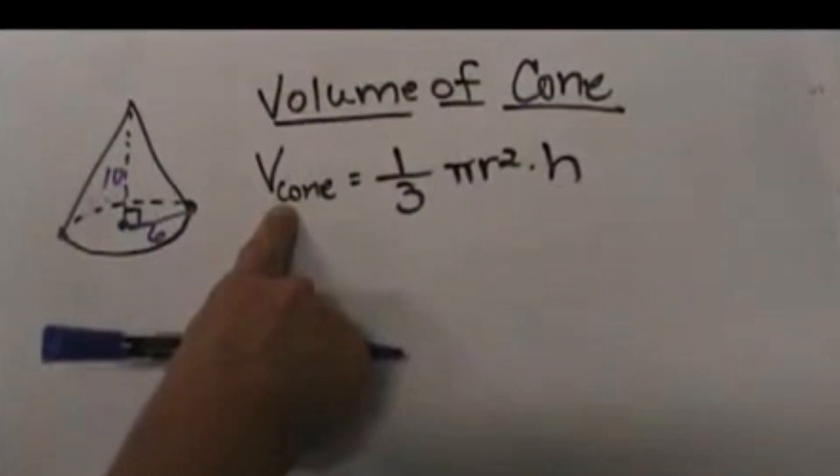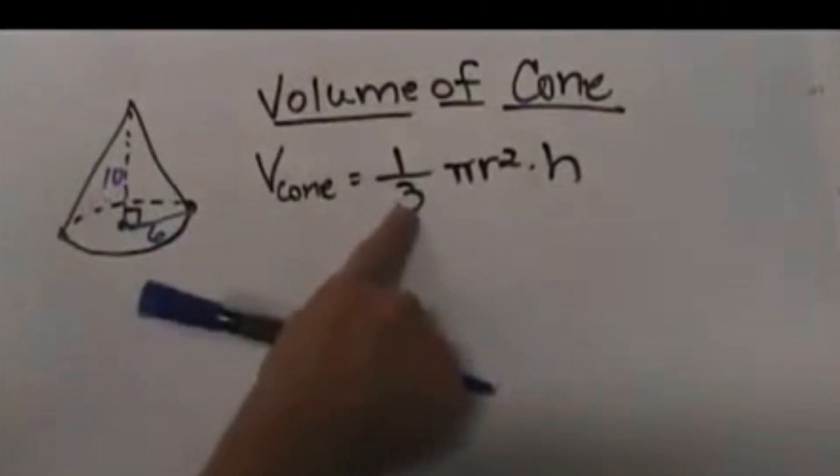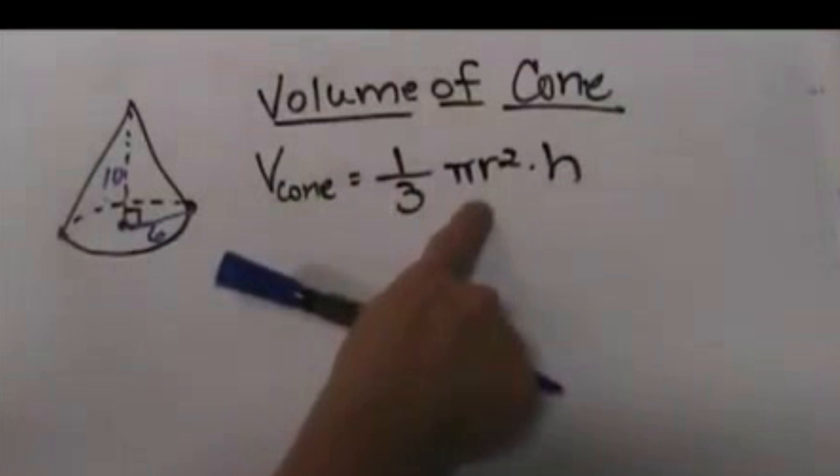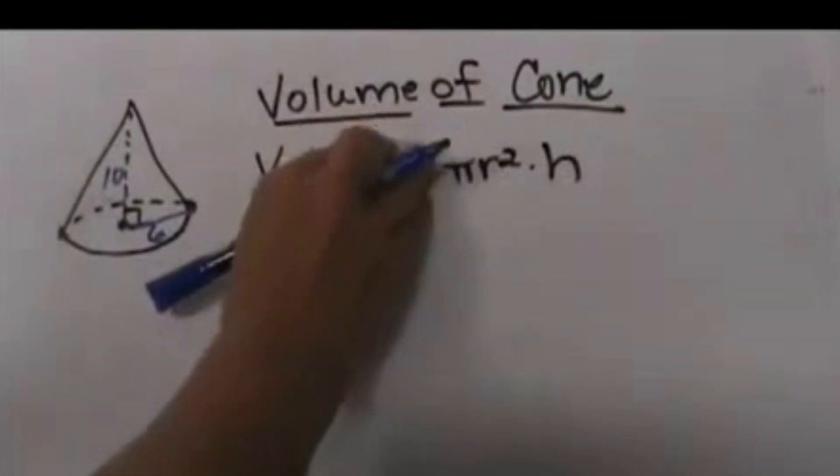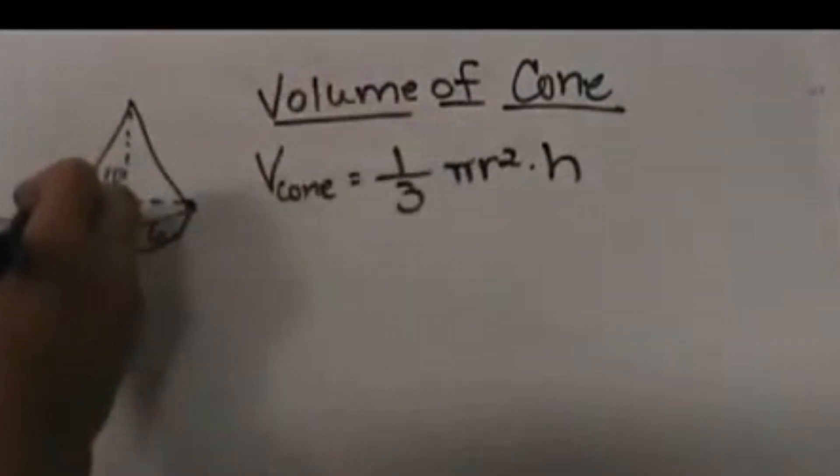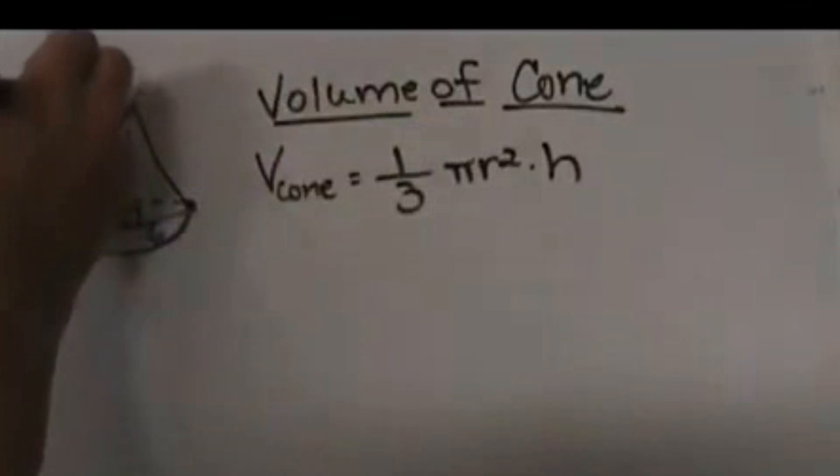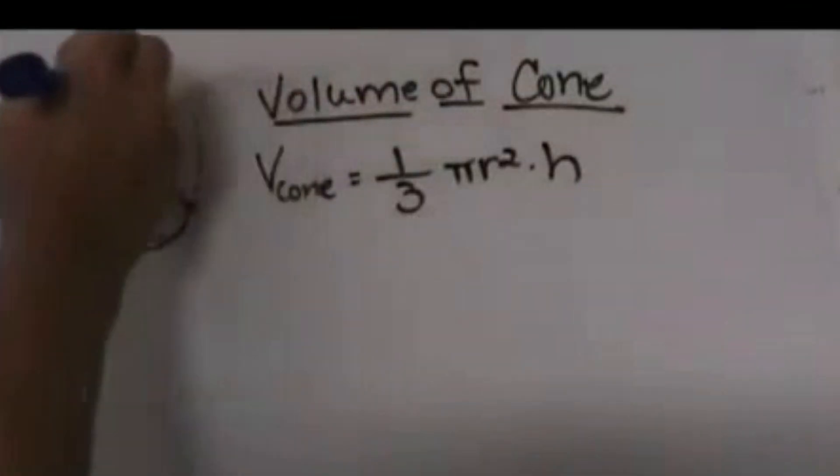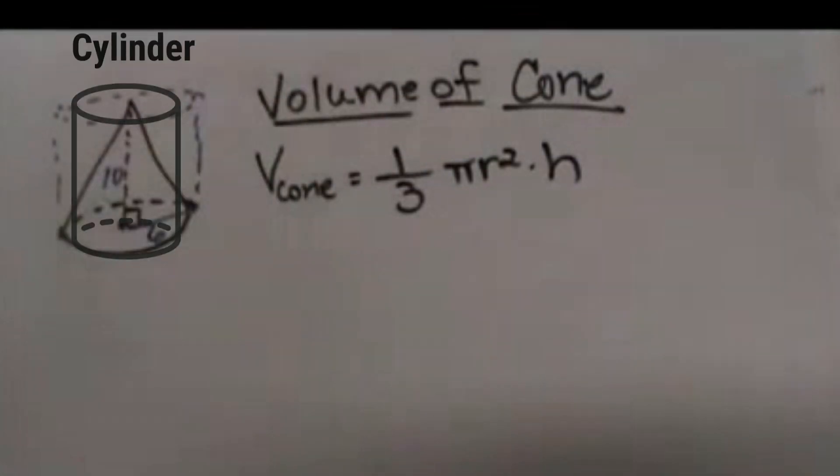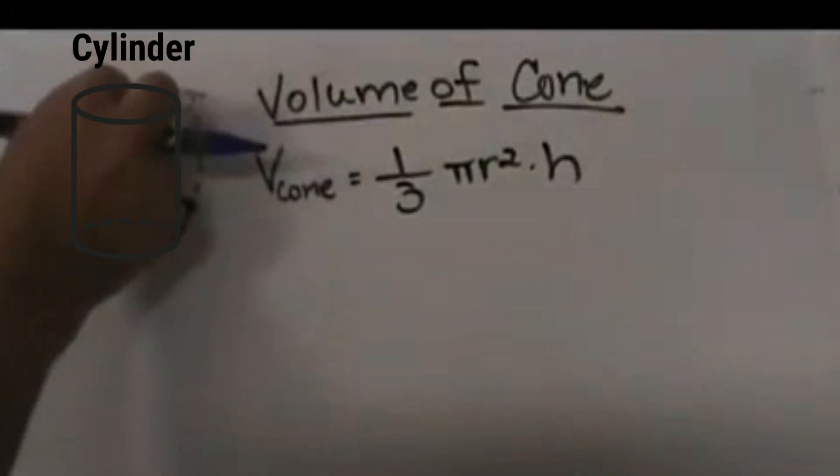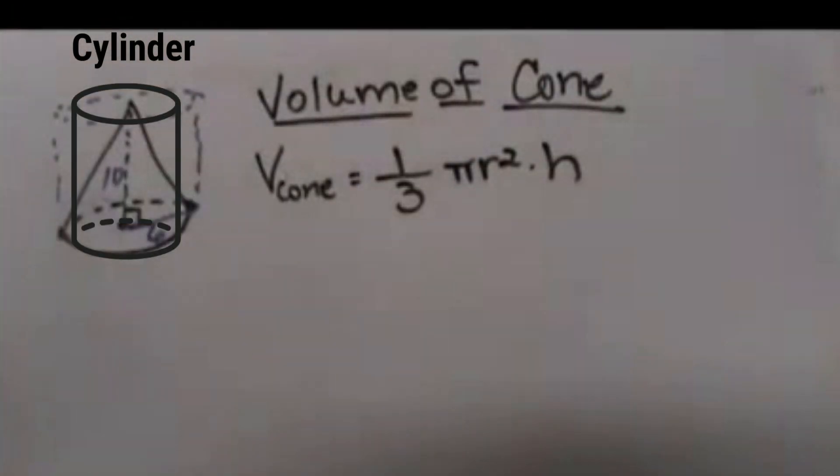The volume of a cone is 1/3 π r² h. Pi r squared h is actually the volume of a cylinder that has the same height and the same radius. I have sketched it there so you can see the cylinder that the cone would fit inside of.